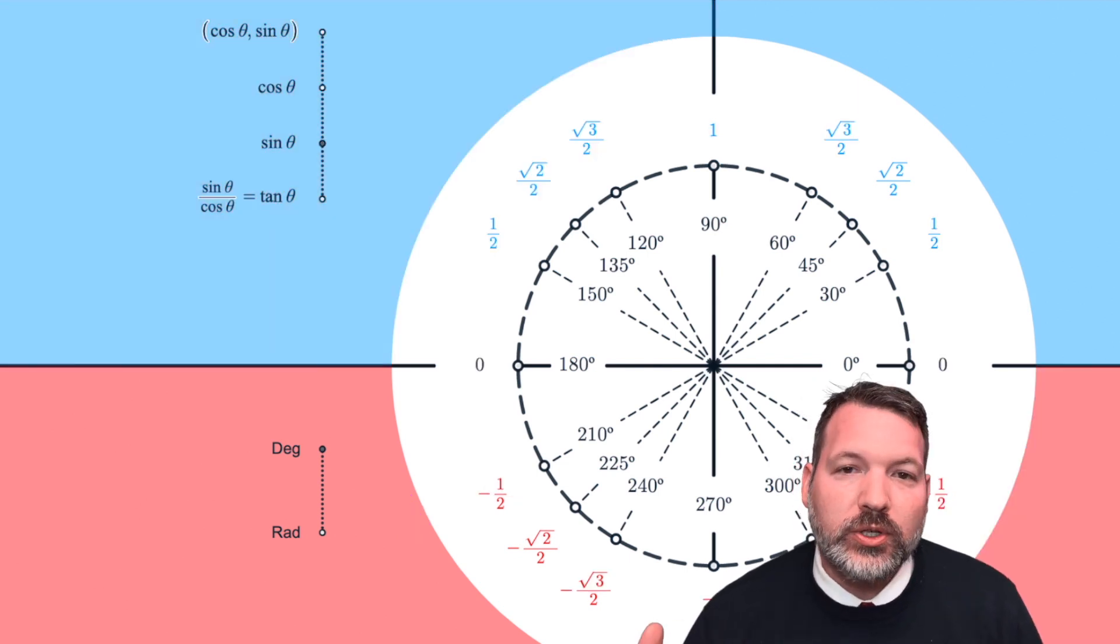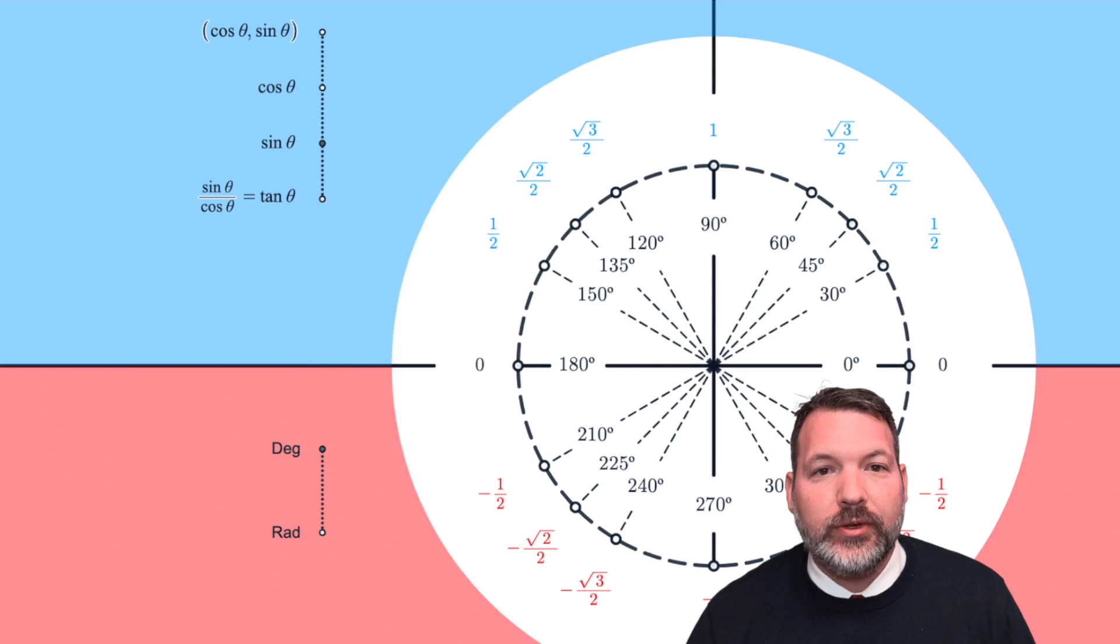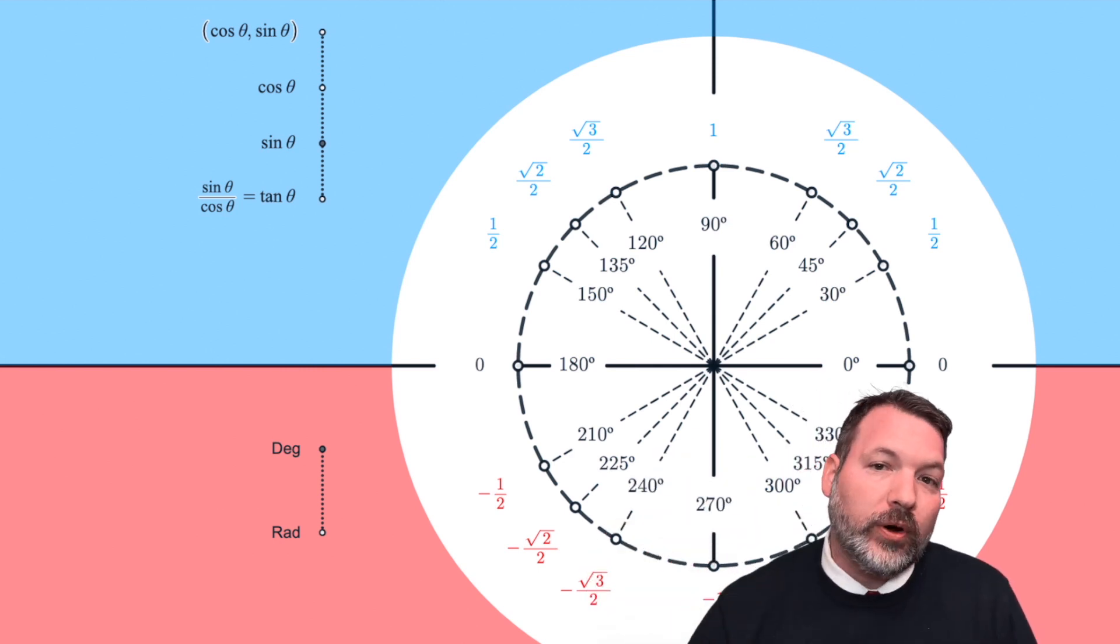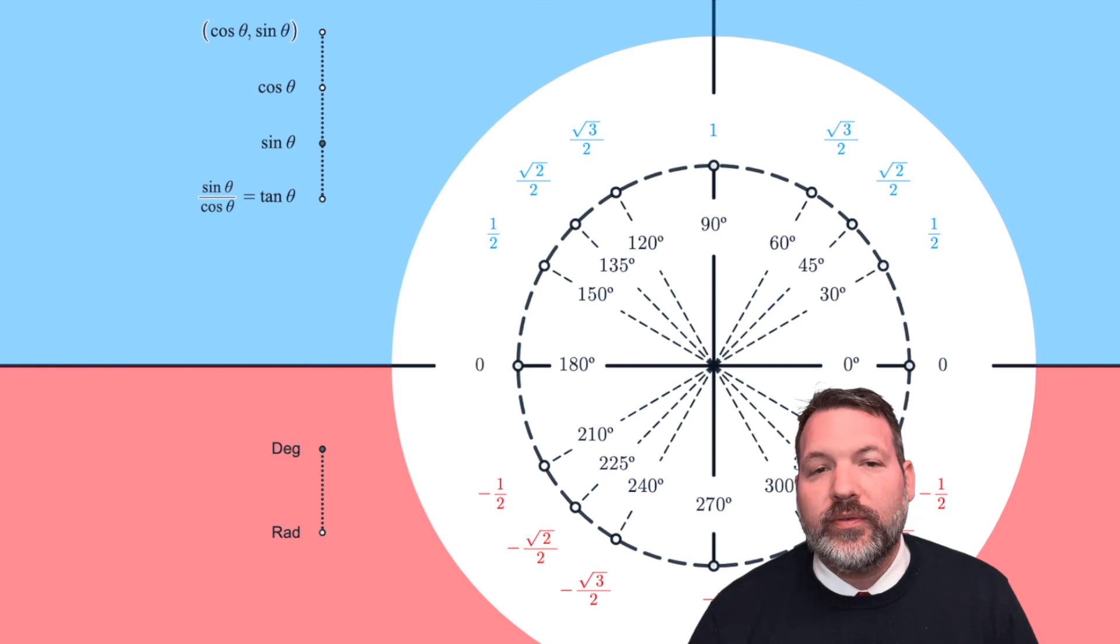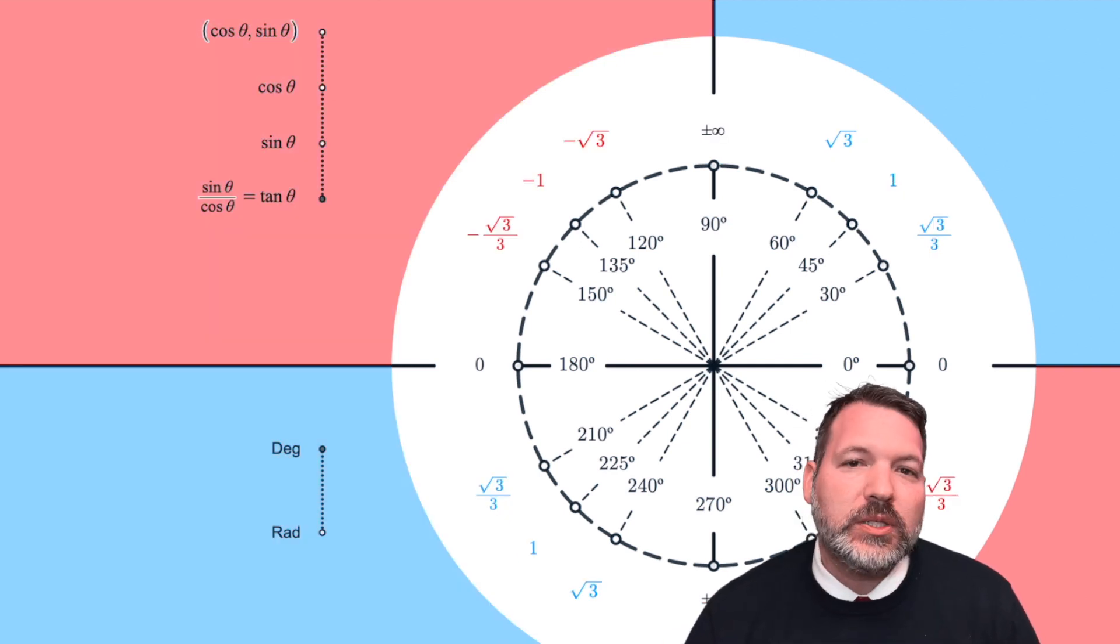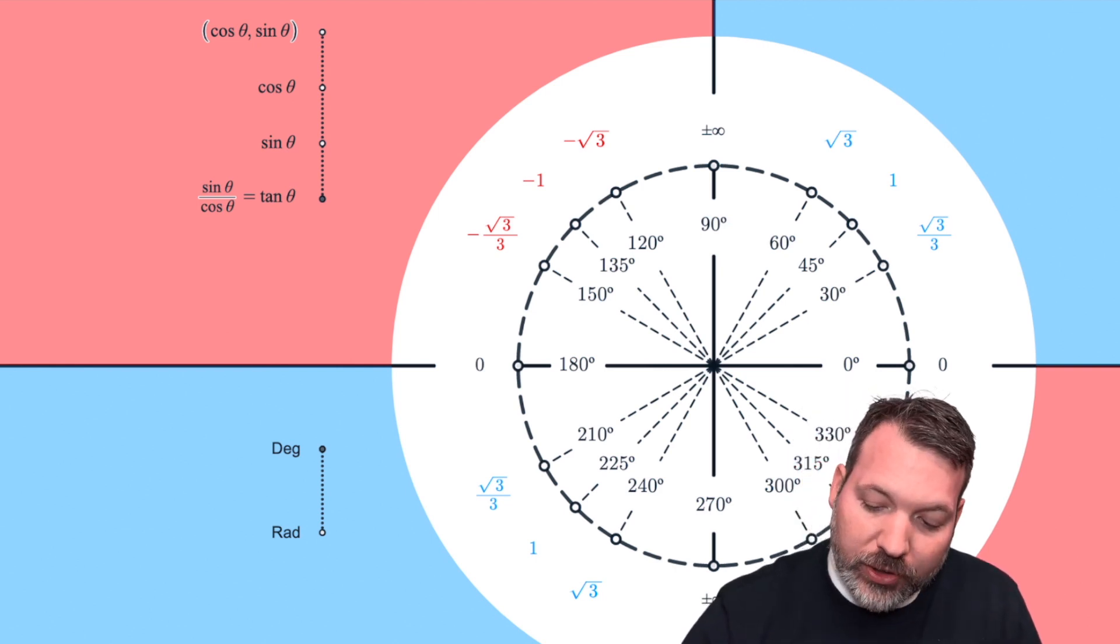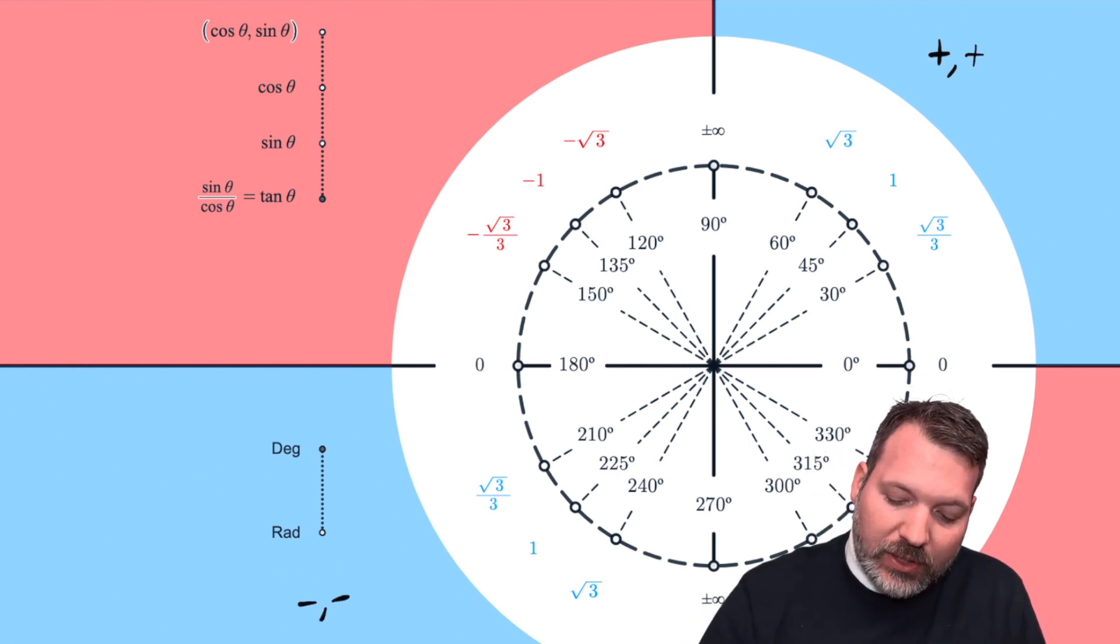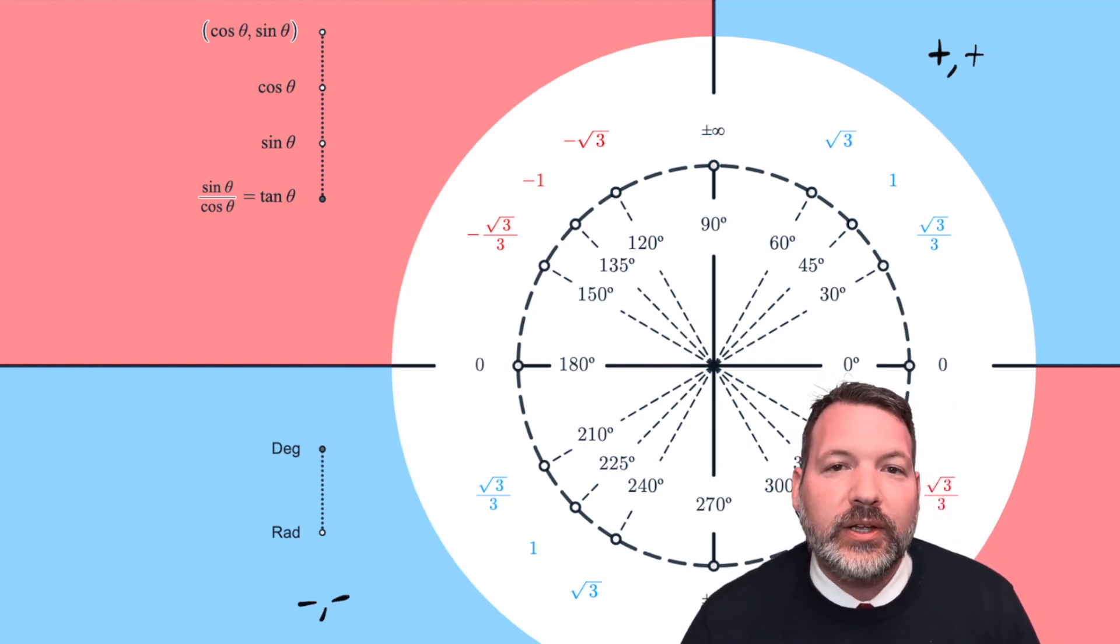Similarly, when I switch to sine, sine is the y-values, and so everywhere above the origin, quadrants 1 and 2, sine is going to be positive, while everywhere below the origin, sine is going to be negative. Tangent is a special case because tangent is defined as the ratio sine to cosine. So everywhere both sine and cosine share the same sign, tangent will be positive. That happens in quadrant 1, where both sine and cosine are positive, but it also happens in quadrant 3, where both sine and cosine are negative.